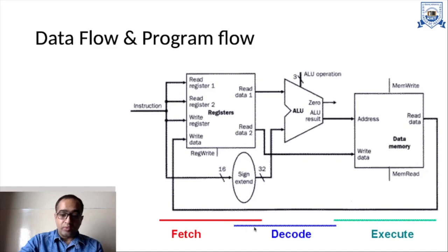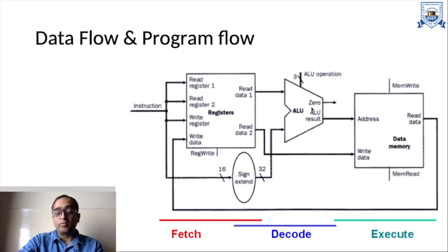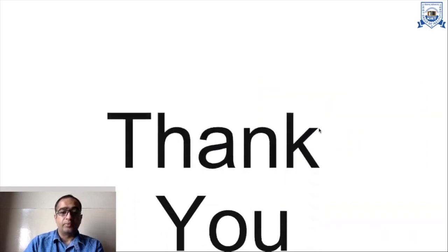As you can see, this is the decode phase. In the decode phase, the instruction written in mnemonics or opcode form is changed to the control word. The control word is the instruction used in the ALU and the operation is performed with respect to the control word. Then data is fetched, the operation is performed, and the ALU result is stored at the address in the memory where you want to store it. This is the entire data flow and program flow.